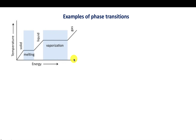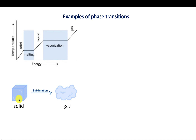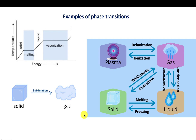It's also possible that a solid directly becomes a gas — this is called sublimation. Carbon dioxide, when very cold, becomes a solid, but as soon as you heat it at ordinary pressure it goes directly from solid to gas.